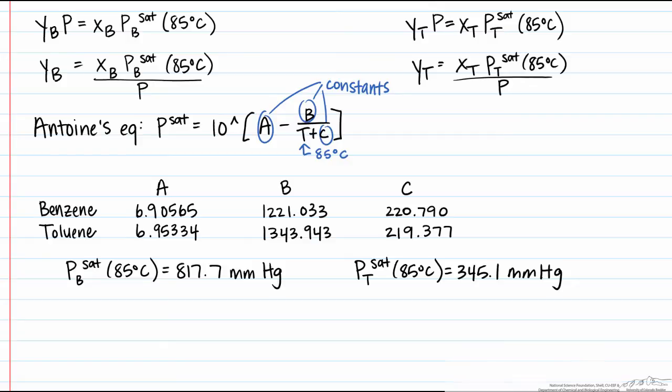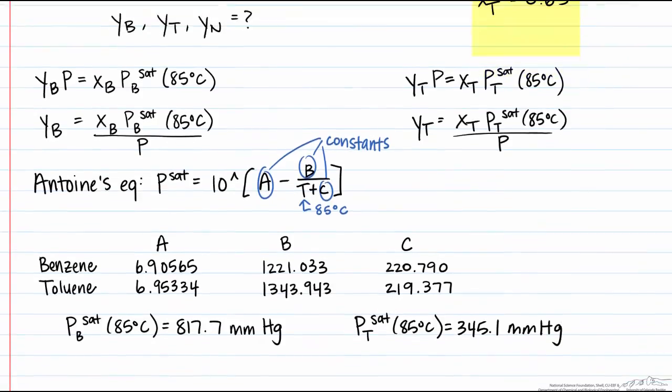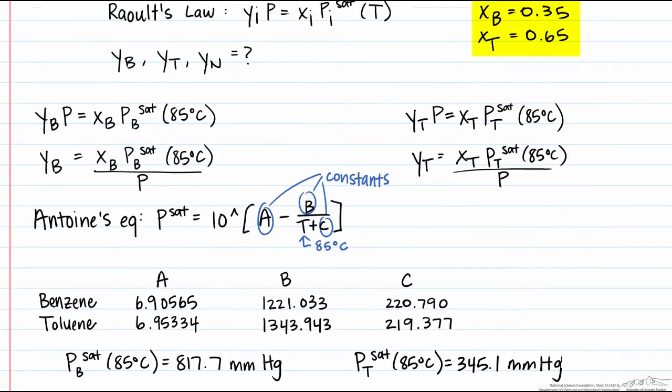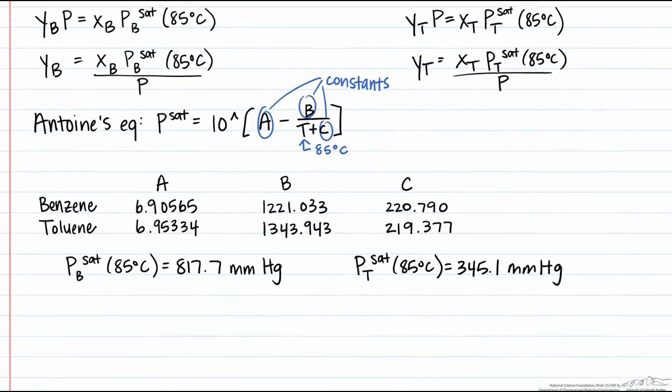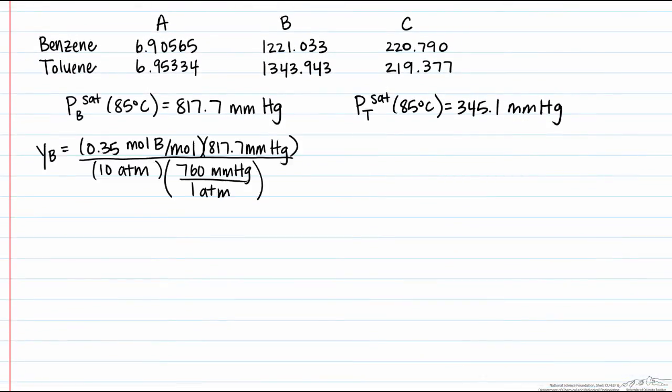And so now we have those numbers. We're given in the problem that x sub b equals 0.35 and x sub t equals 0.65. And if we go back here to look at our equations for y sub t and y sub b, we see that we have all the necessary information to solve for. And so when we calculate this, we find that y sub b is 0.04.